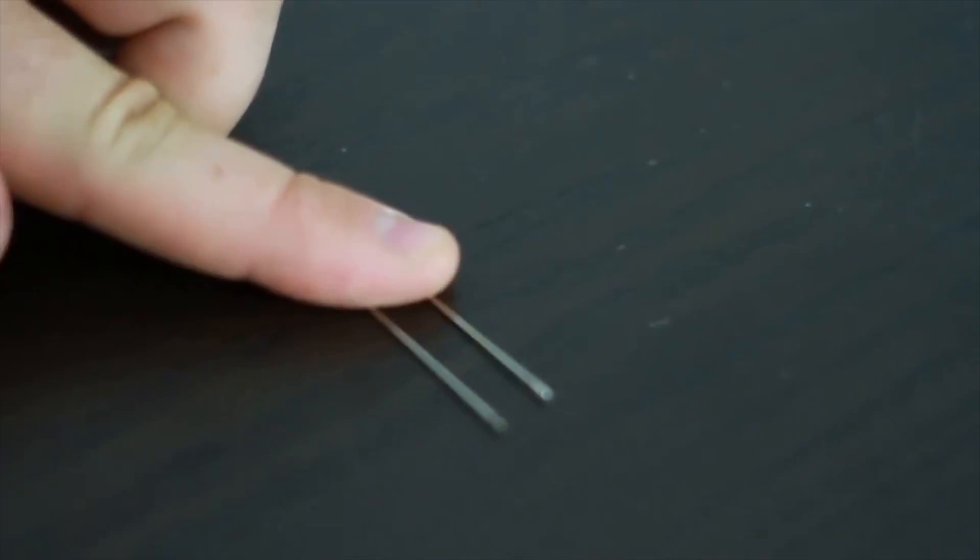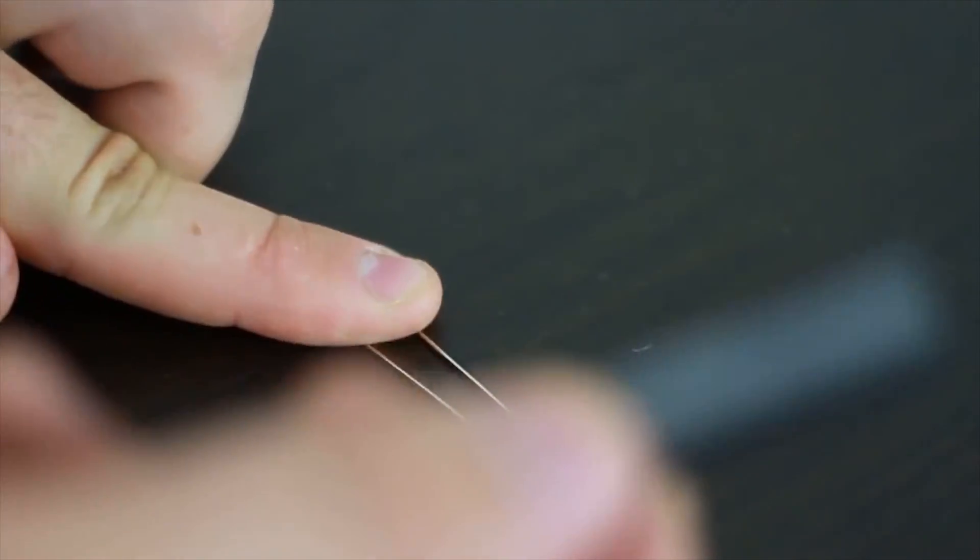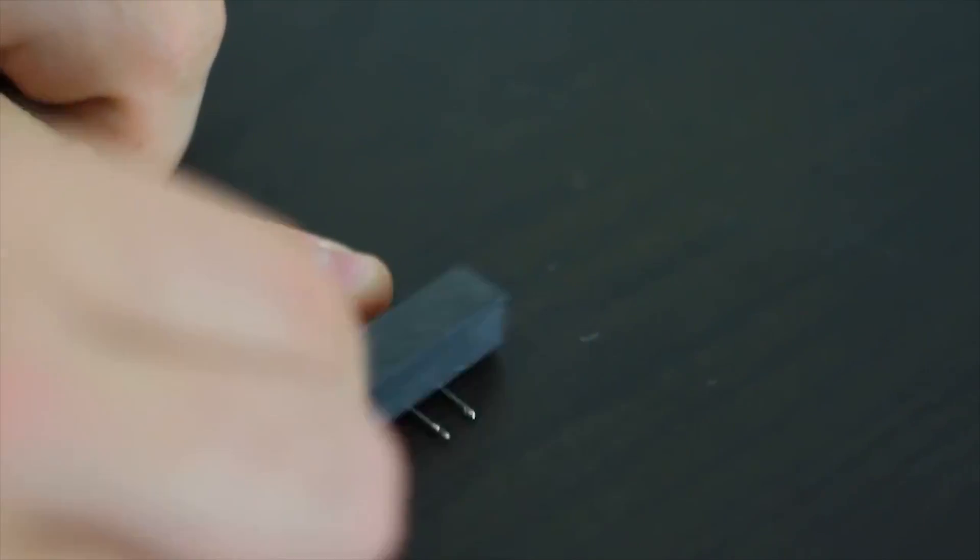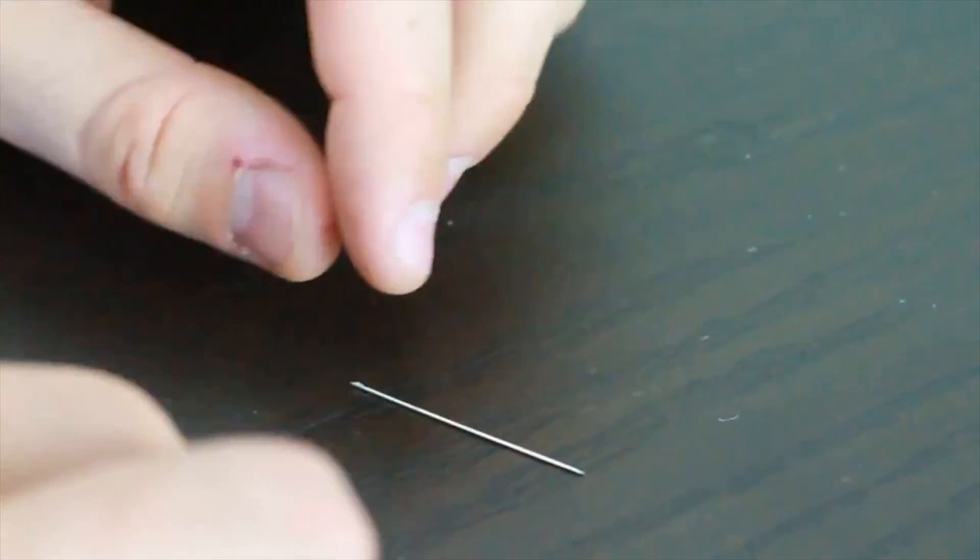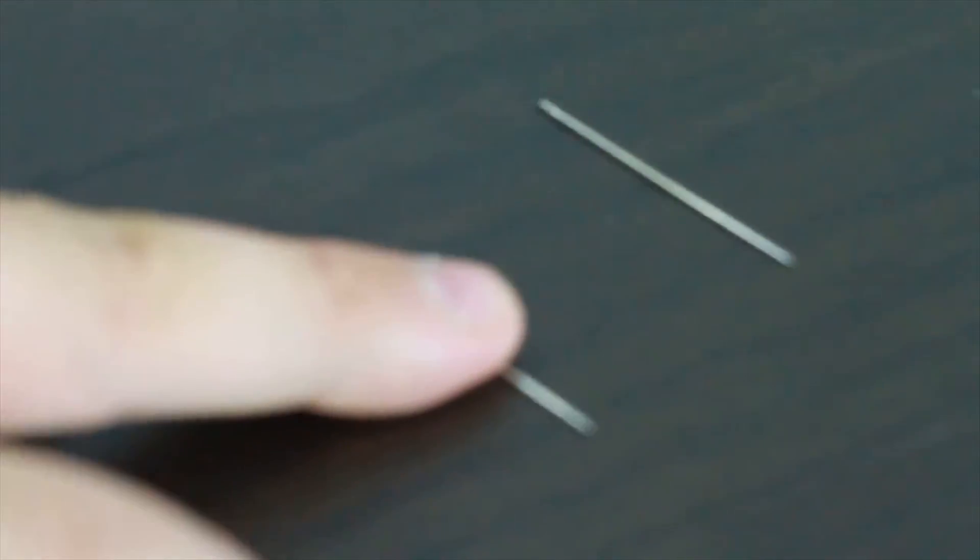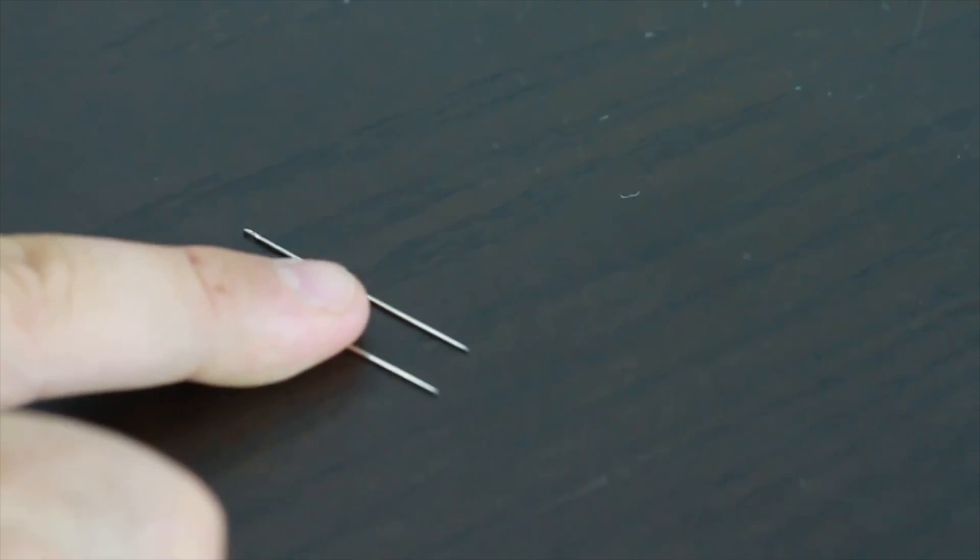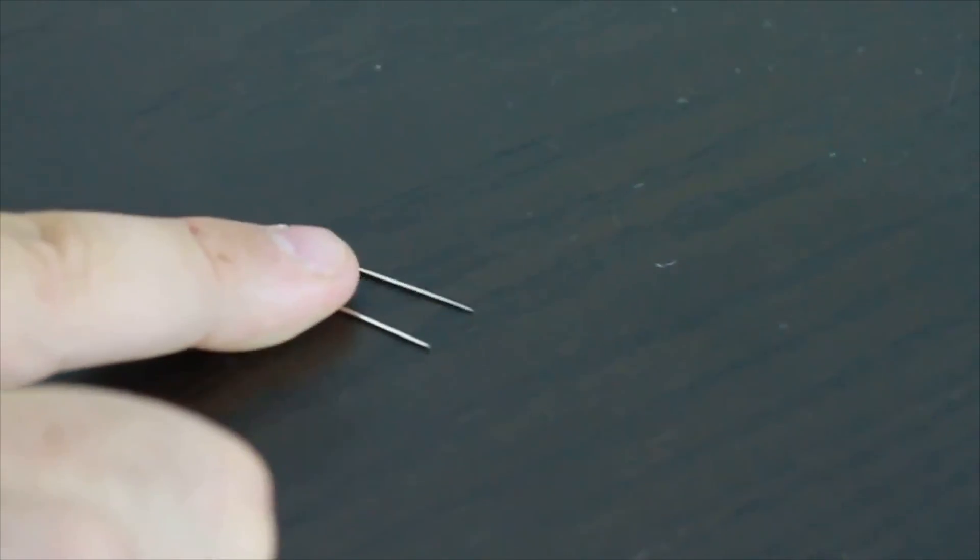All right, grab two of your needles like that, put them together, then grab your magnet and magnetize them. Do it a bunch of times, turn them over and magnetize the other side. Let's test it out. I'm gonna leave this one alone and then I'm gonna push it with this one. See what happens?